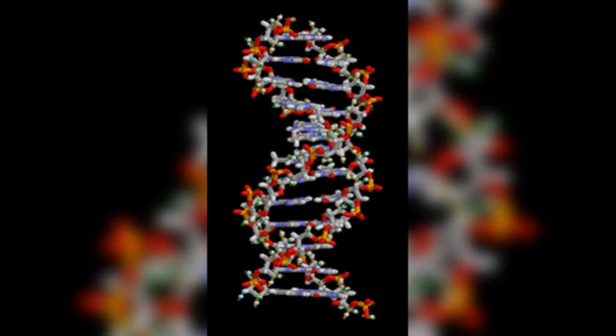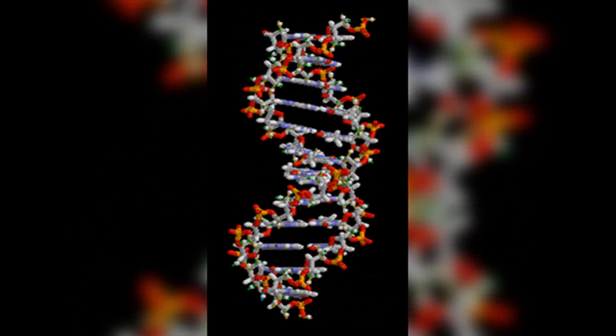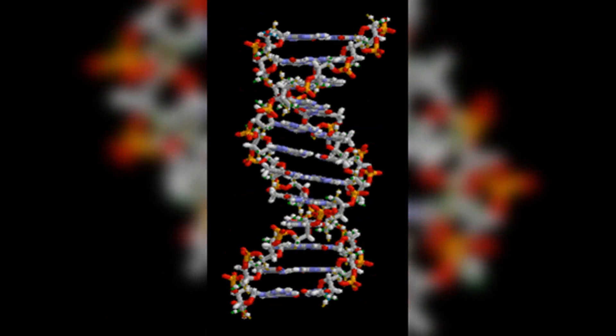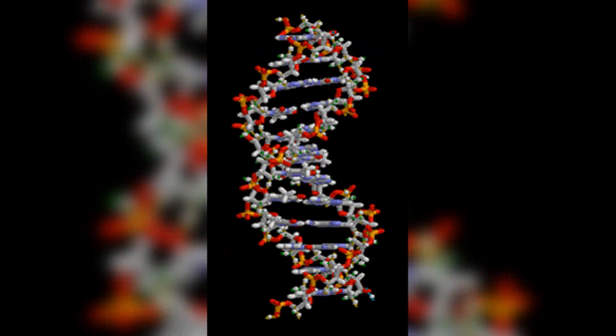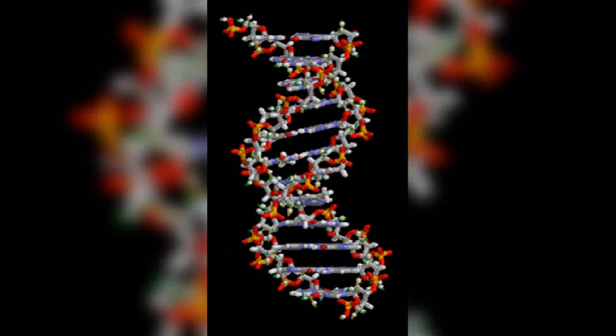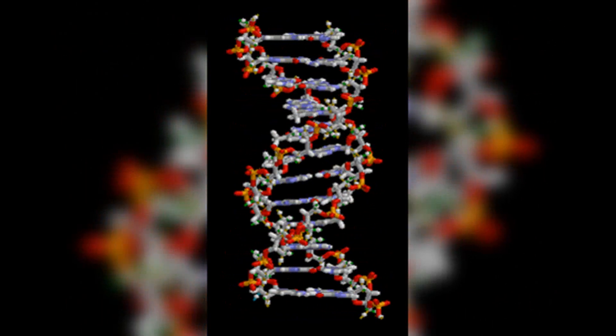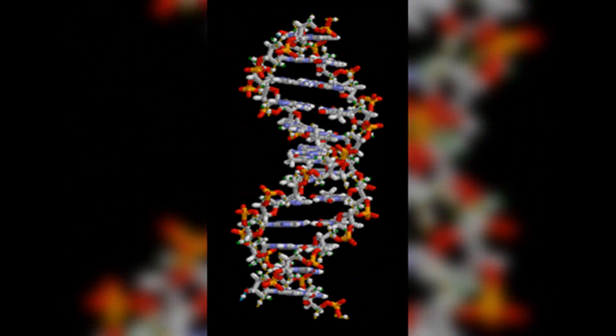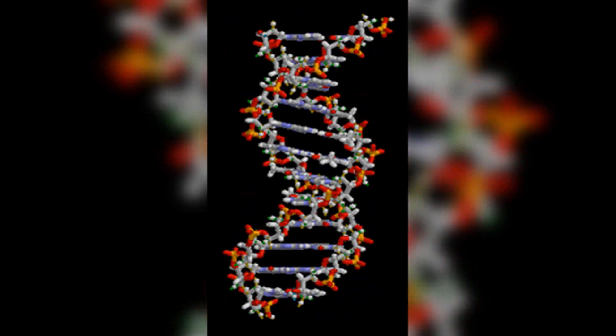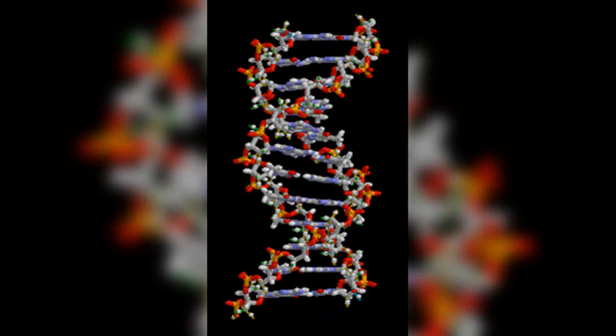The discovery of the structure of DNA is credited to James Watson and Francis Crick, along with contributions from Rosalind Franklin and Maurice Wilkins. Their work, published in 1953, established the double helix structure of DNA, which has since become a cornerstone of modern biology and genetics.